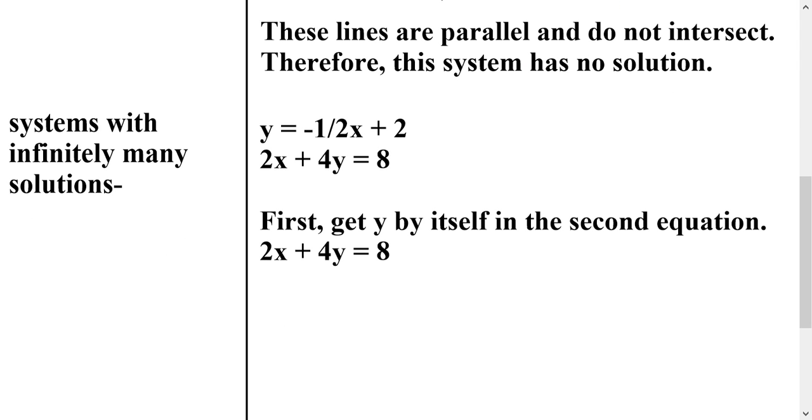All right, now let's try a system with infinitely many solutions. Well, let's think about how that's possible first. Okay, if it has one solution, it crosses at one point. If it has no solution, it doesn't cross at all. So if it has infinitely many solutions, that means it would have to cross at every single point possible. So the only way for that to happen is for it to be the exact same line on top of another one. So if I look at these two equations, I have y = -1/2x + 2, and then 2x + 4y = 8.